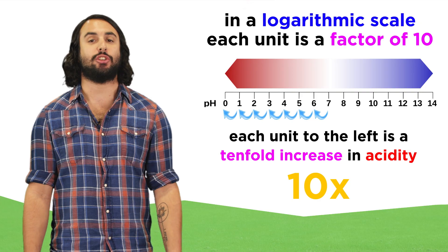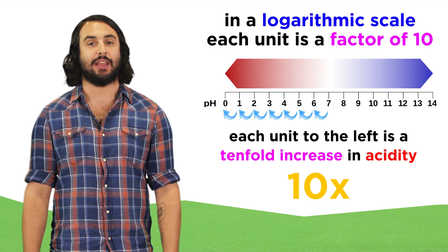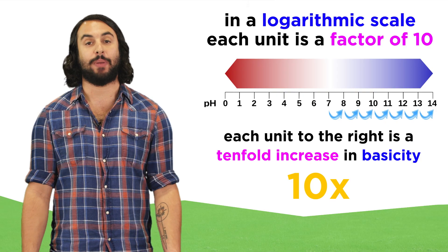This is the case with the pH scale, where one unit down means ten times more acidic, and one unit up means ten times more basic.